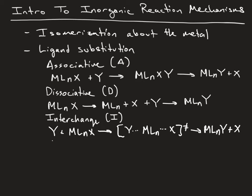This can go through an ID or an IA-like process. In the dissociative interchange, you're breaking the X bond more at the transition state than you're forming the Y bond. In the associative mechanism, you're making the Y bond more than you're breaking the X bond at the transition state.